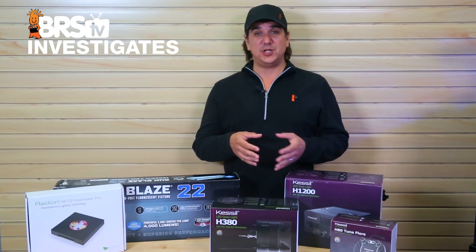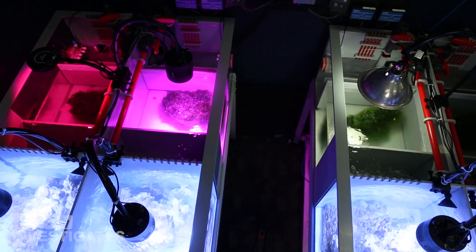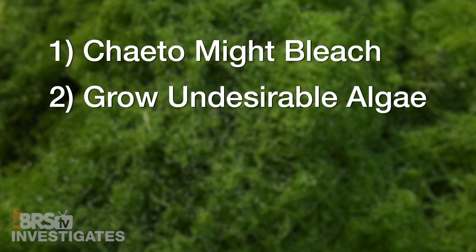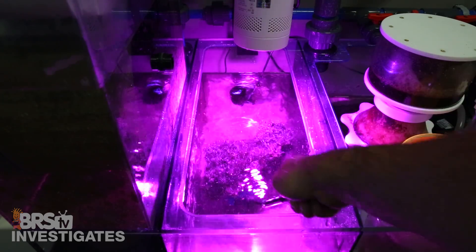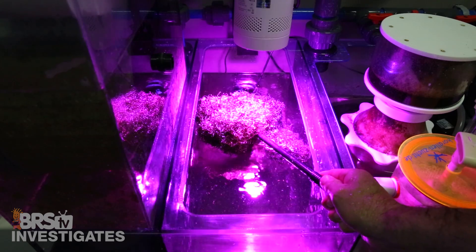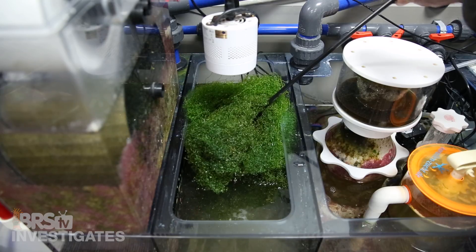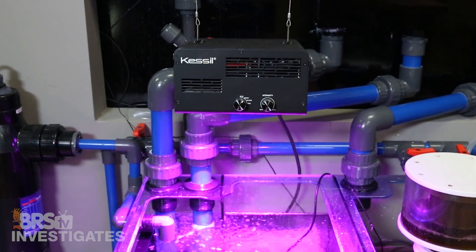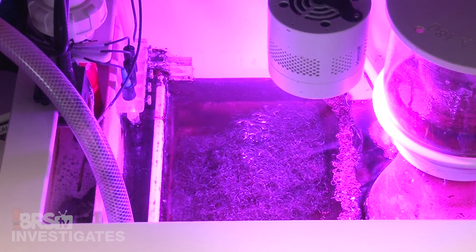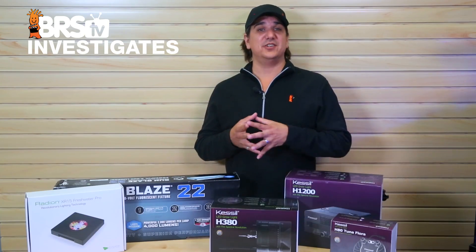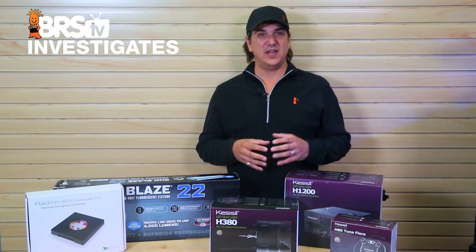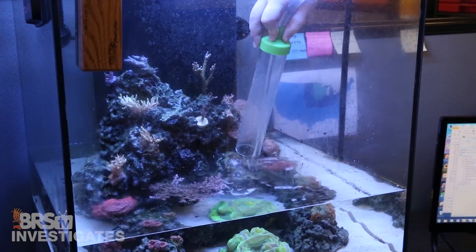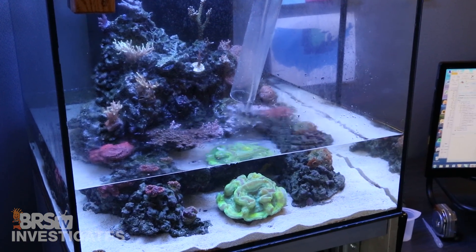Moving on to a few tips on using these refugium lamps successfully — most of these lights are much more powerful than your average compact fluorescent, and if you just throw one of these on max you can expect two things to happen: one, the chaeto might bleach, and two, you might grow some other undesirable algae. As for bleaching — many of these lamps have almost no green in them, so the chaeto will never look green and it might even look bleach white while the light is on, but once you shine a full spectrum light on the chaeto it will look green again. Remember, if there is no green light in the spectrum it is impossible for the chaeto to appear green to the eye. Mount these lights high at first and work them down over several weeks — the chaeto will absolutely acclimate and utilize the higher PAR and better spectrum if you don't blast it immediately. As relates to undesirable algae growth like hair algae in the fuge, this is almost always because the nutrients in the tank are already sky high. You are way better off doing a series of large water changes to get the nutrients down first and then use the new high power fuge to keep them down.